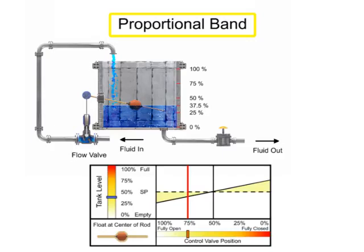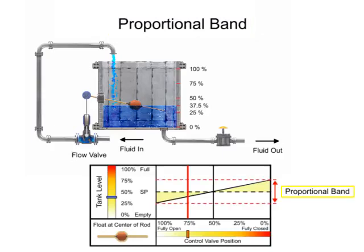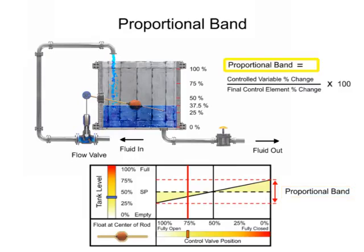Proportional band is defined as the percentage of change in the controlled variable which causes the final control element to go through 100% of its operating range. Proportional band is calculated by dividing the controlled variable percent change by the final control element percent change, multiplied by 100.